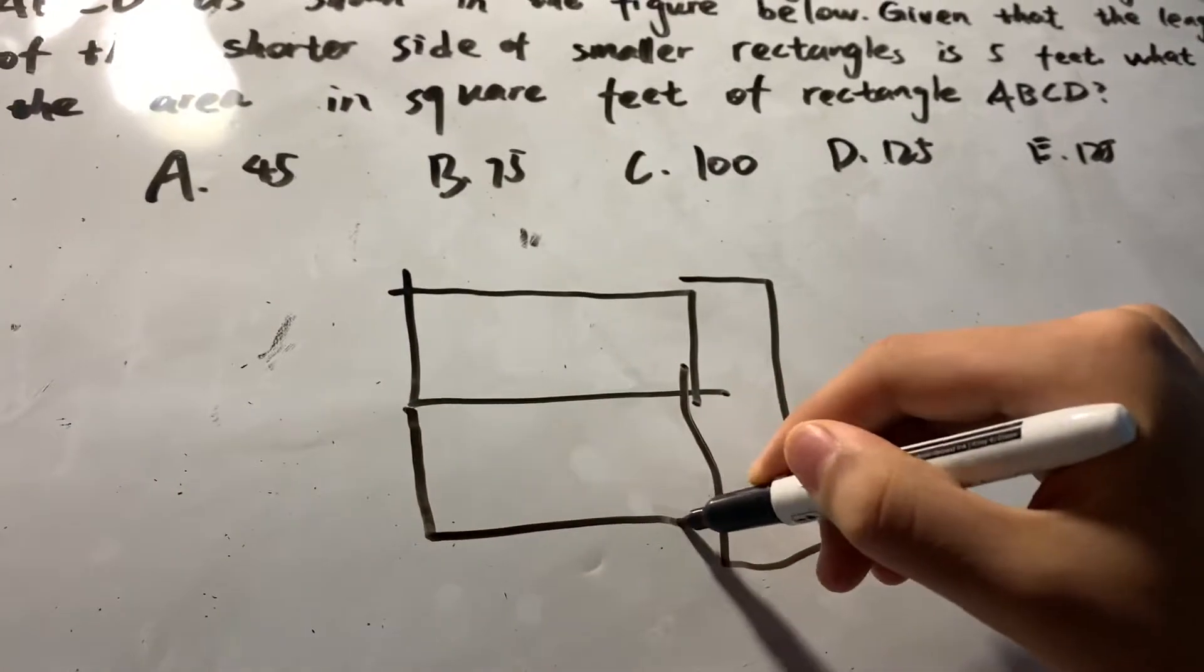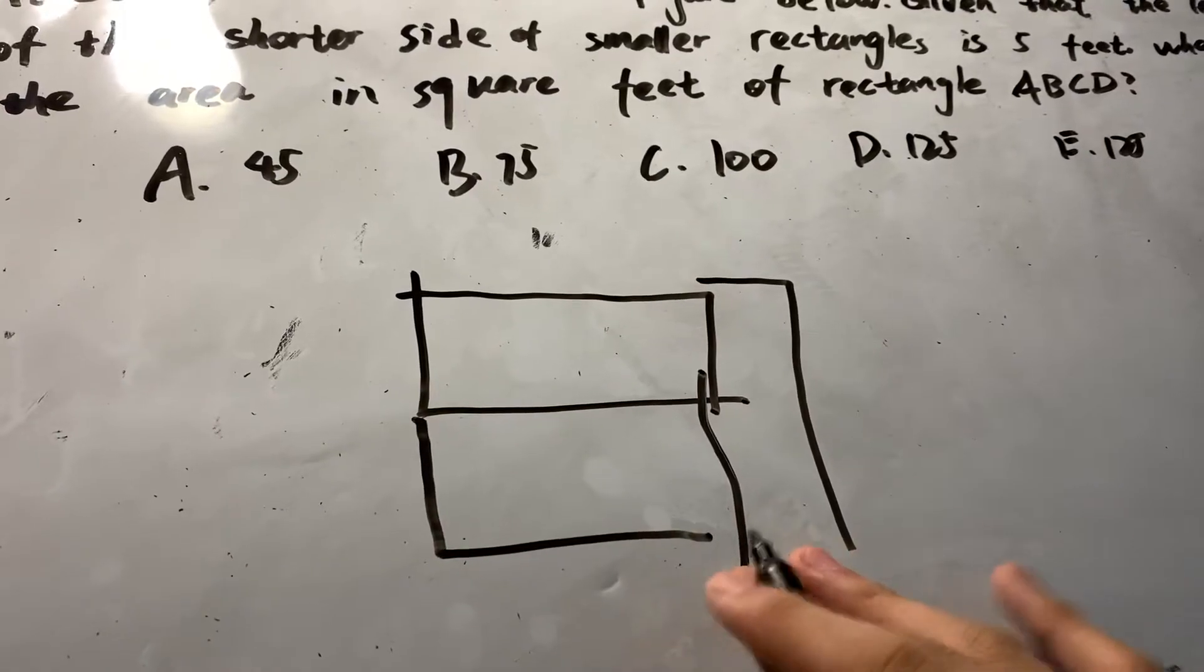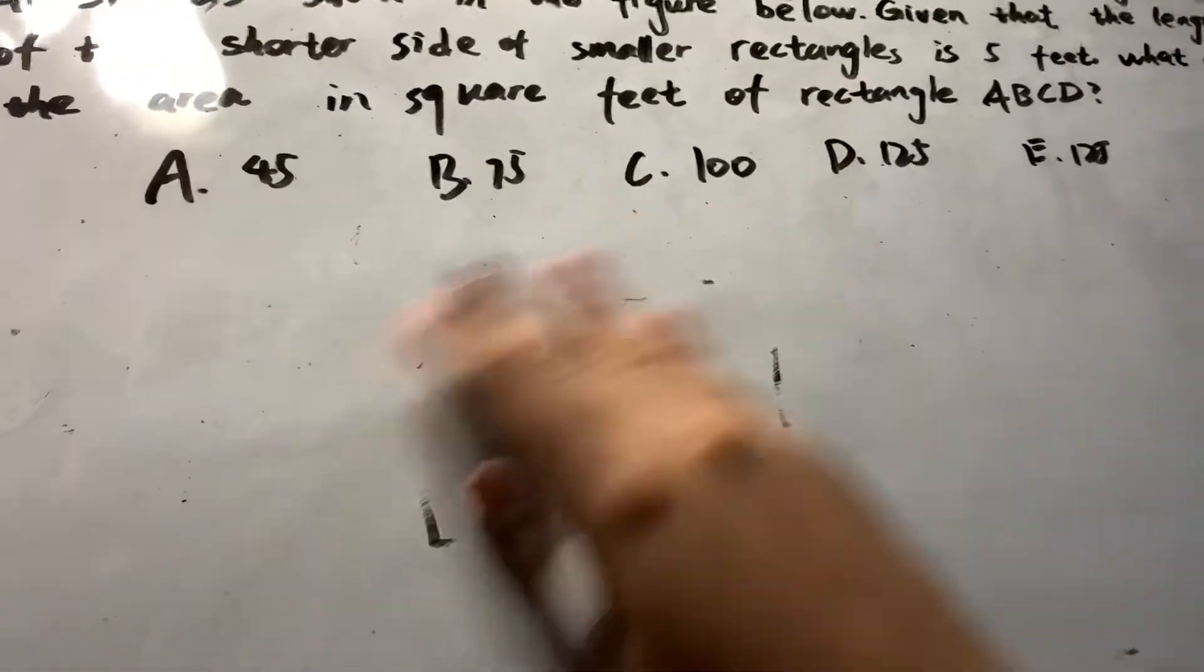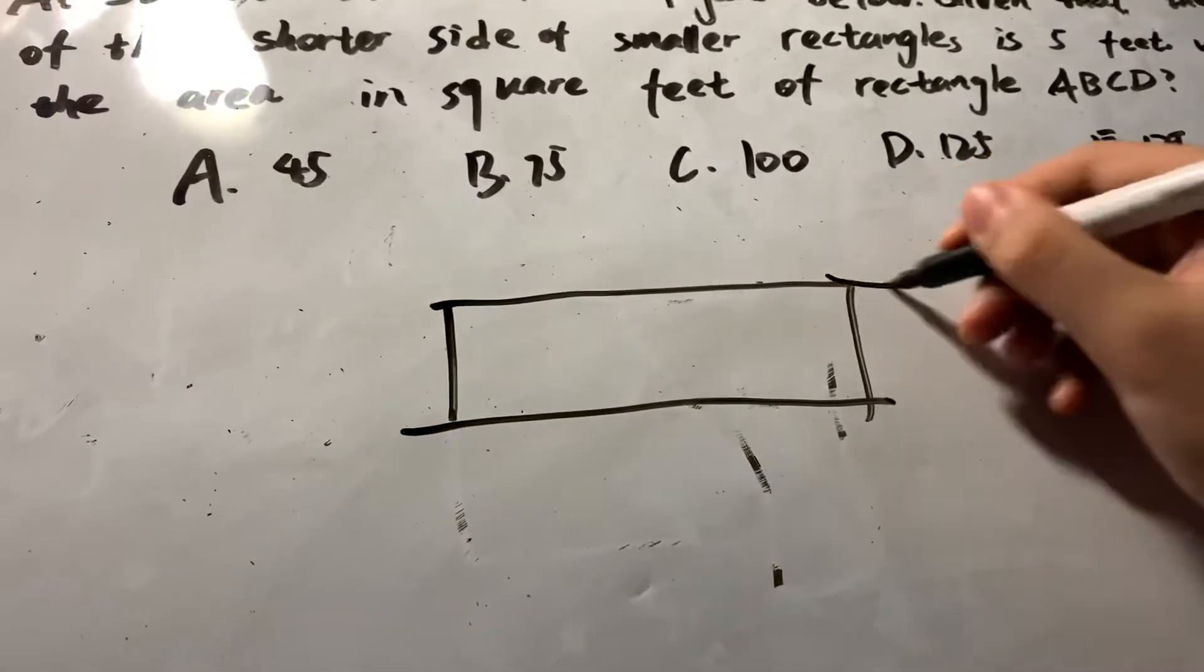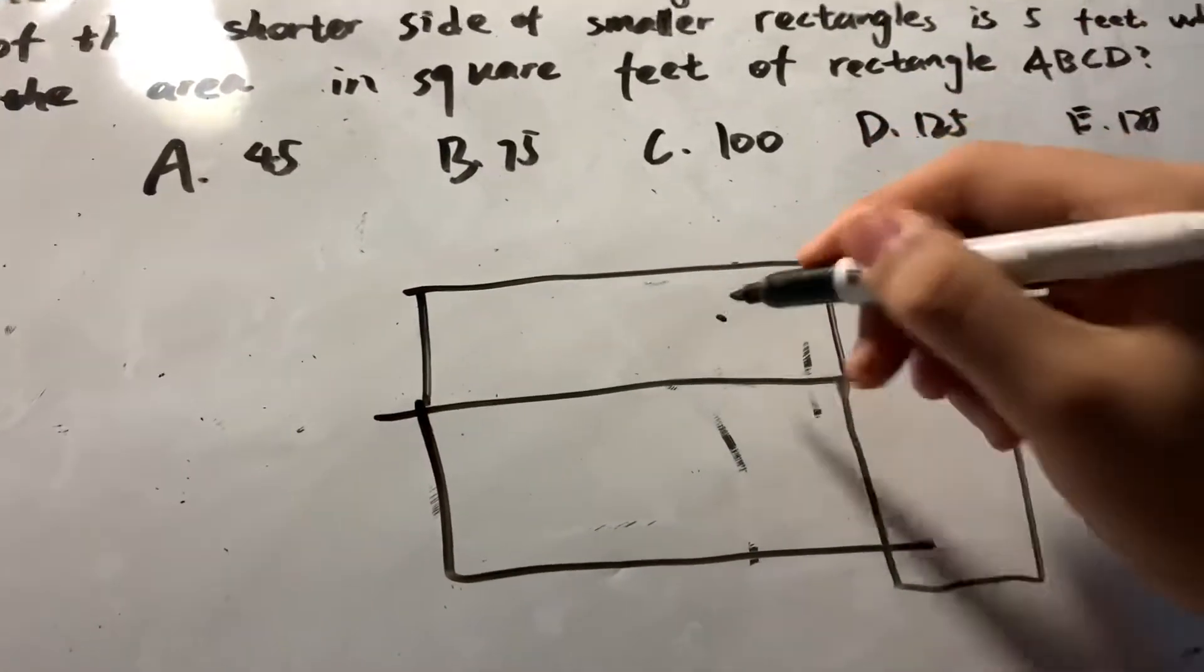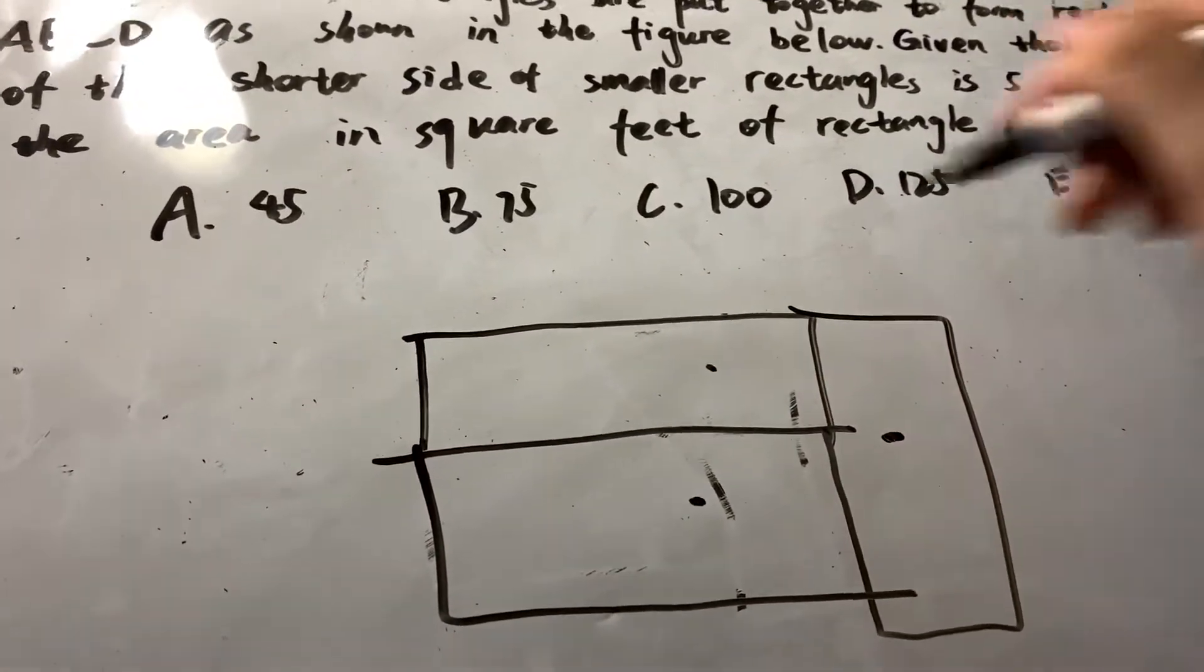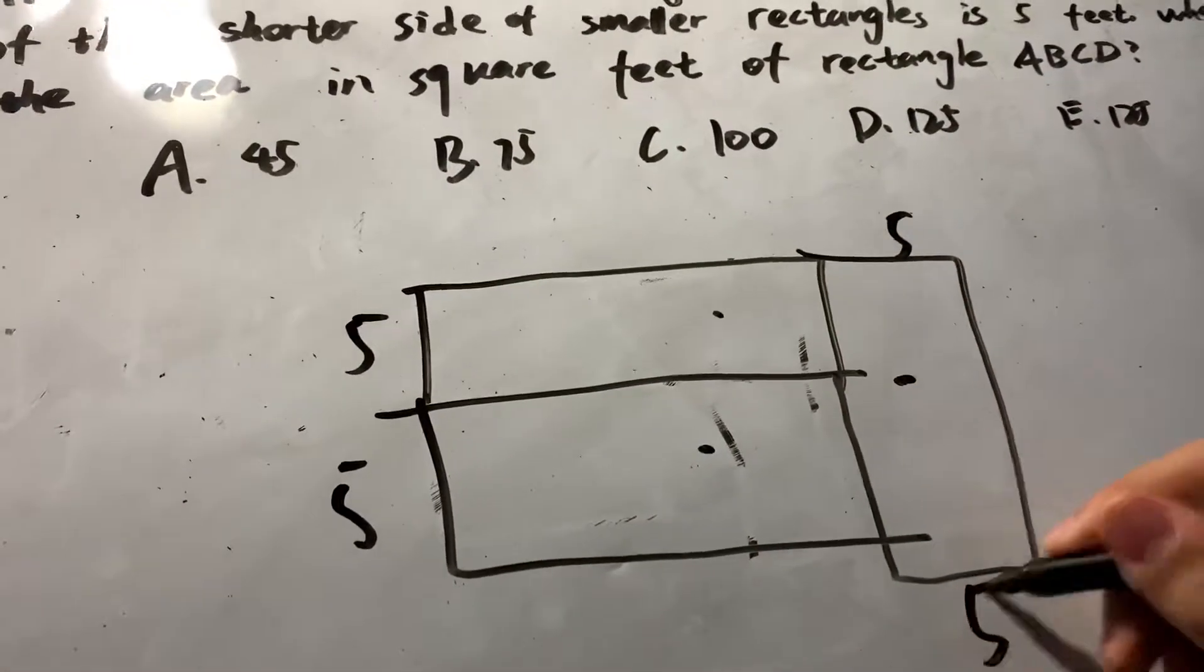As you can see, we can first label the numbers that we already know. From that, we know that it has two rectangles and they form a large rectangle. We know that the shorter side is 5, so we can label them out.